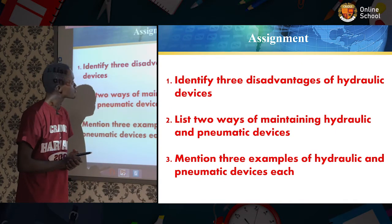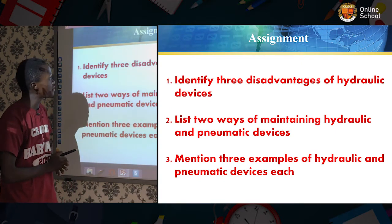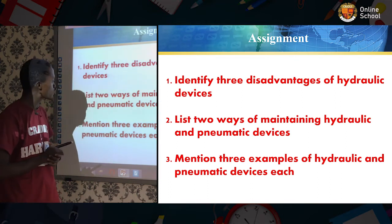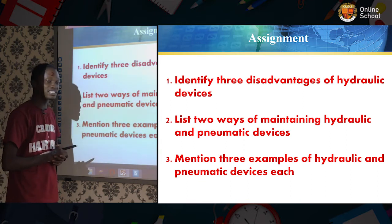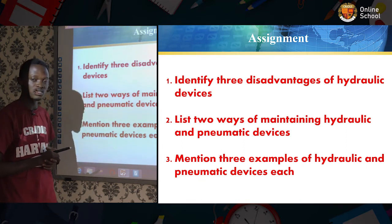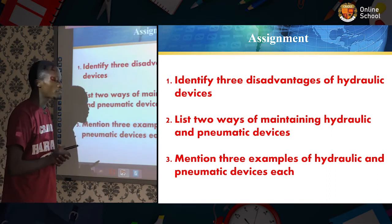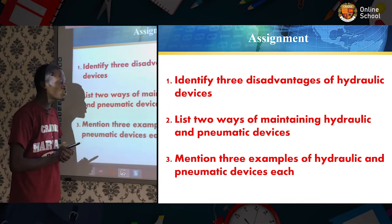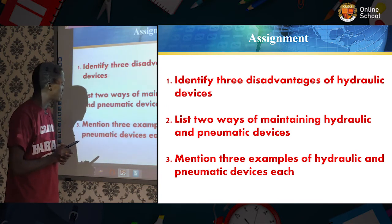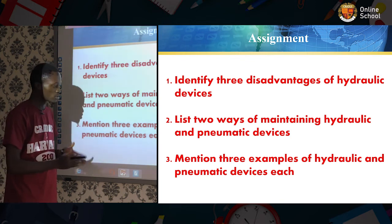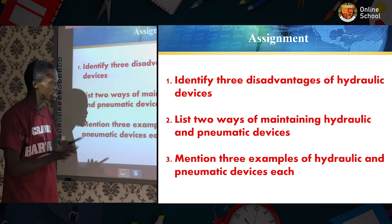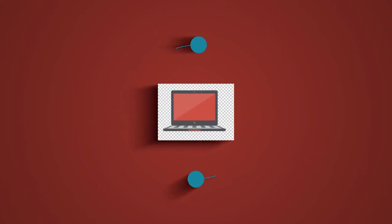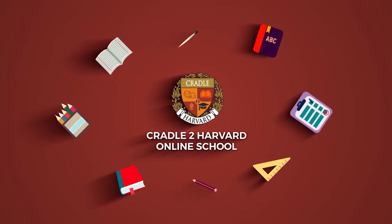Assignments. Number one: identify three disadvantages of hydraulic systems. Two: list two ways of maintaining hydraulic and pneumatic systems. Three: mention three examples of hydraulic and pneumatic devices each. Four: state three advantages and three disadvantages. I trust you had a nice time — I'll see you in our next class. Thank you.